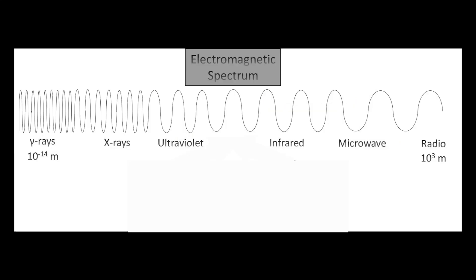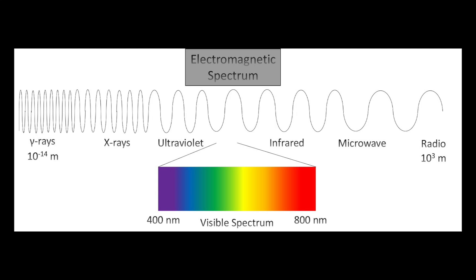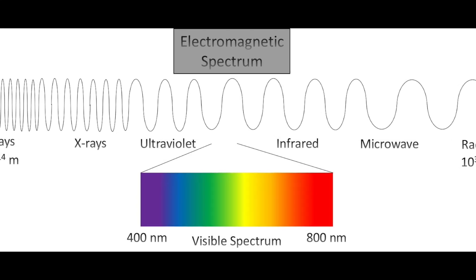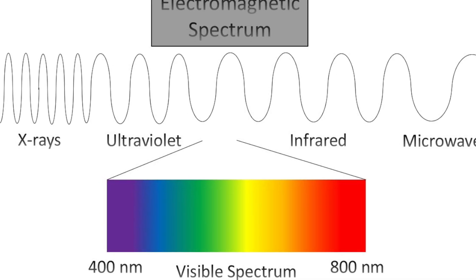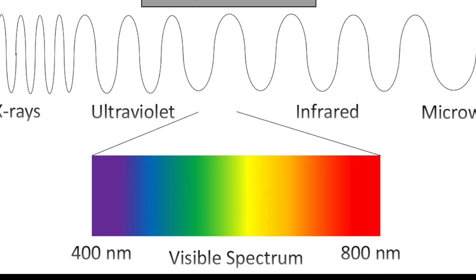Light, or electromagnetic radiation, spans a wide range of wavelengths from gamma rays to radio waves. Based on the region of the electromagnetic spectrum applied, a multitude of chemical characteristics and properties can be probed. In this video, we will focus on the visible and near-infrared, or IR, regions of the electromagnetic spectrum.